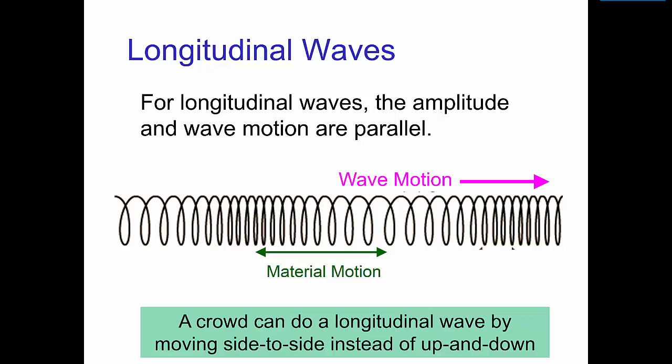If you pull and push on a spring, you pulse longitudinal waves. A crowd could make longitudinal waves by swinging from side to side while sitting in their seats instead of standing up and down. This would probably look kind of stupid.